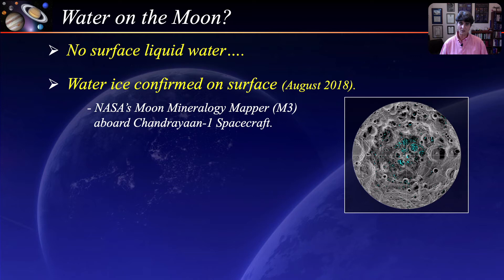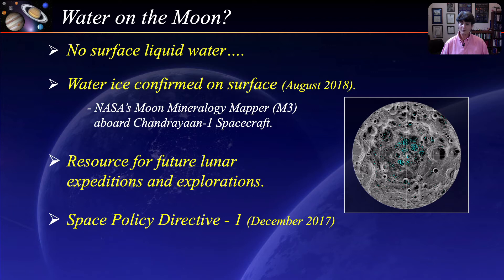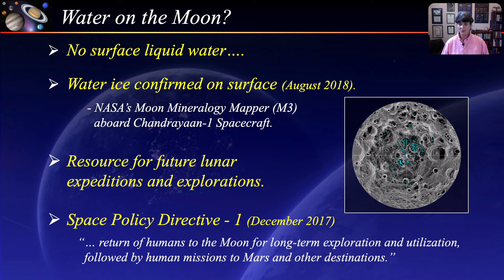With enough ice sitting at the surface, water could possibly be accessible as a resource for future expeditions. In December of 2017, NASA was given a new direction to refocus exploration efforts on the Moon, with an eye to eventually going to Mars and beyond. The policy states in part: the United States will lead the return to the Moon for long-term exploration and utilization, followed by human missions to Mars and other destinations. Learning more about this recently discovered ice will be a key mission focus for NASA and its commercial partners.